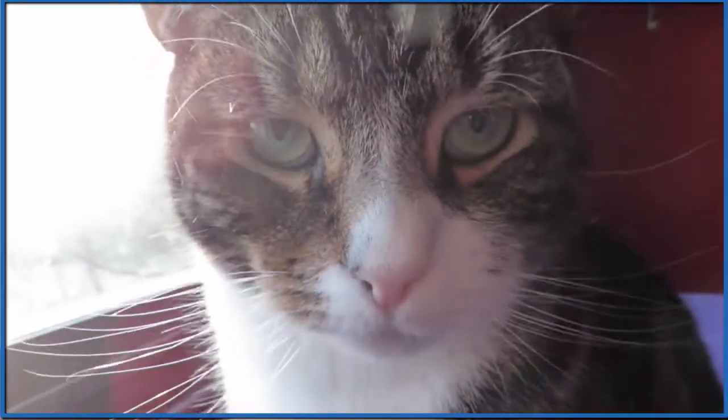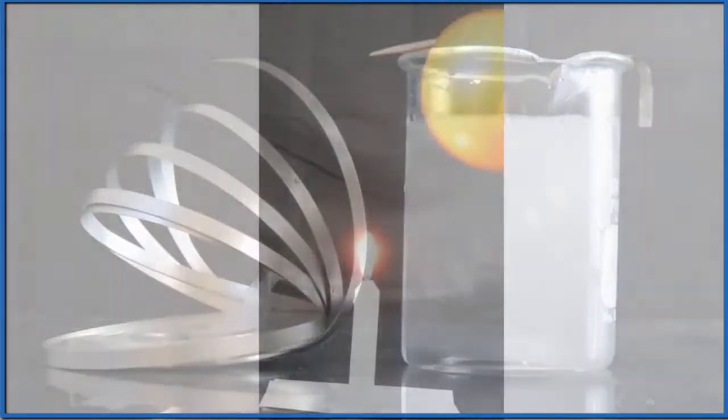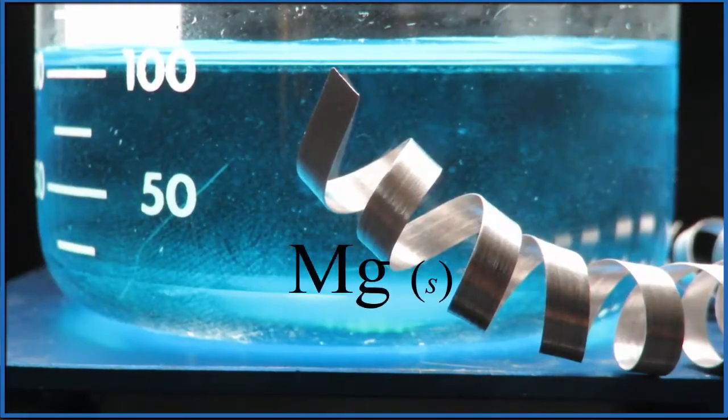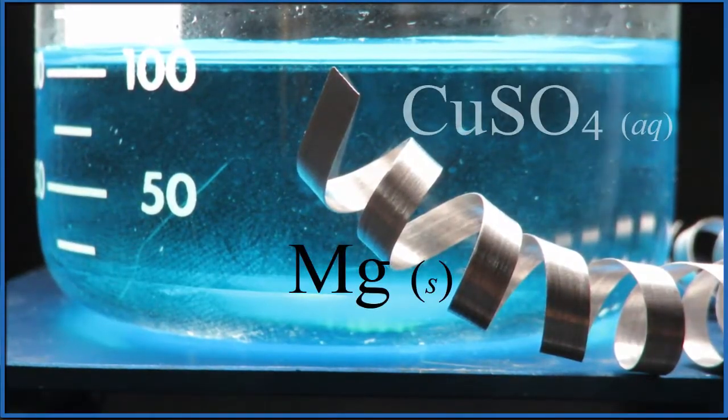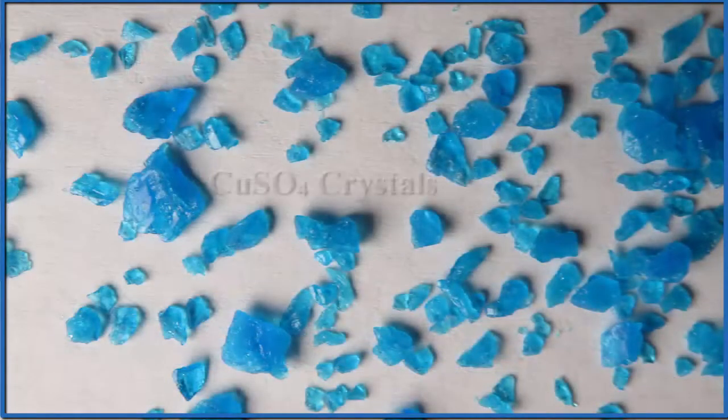Recently we put magnesium metal in hydrochloric acid, then we lit the hydrogen gas on fire, which was rather pleasing. Today what we're gonna do is put magnesium metal with copper sulfate, and I have to be honest, copper sulfate looks a lot like fossilized smurf poop.